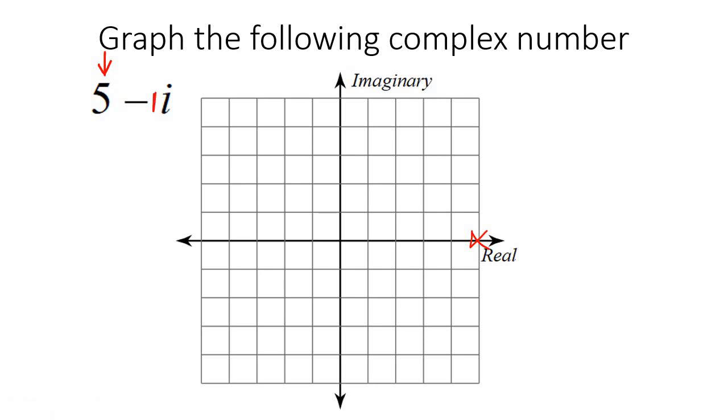And then what is the imaginary part? It's minus 1, so you go 1 down. So that means we're going to go 5 across and 1 down, so there's your dot. That is the answer. You don't have to draw a line. You don't do anything. You're literally just going to put a dot. That is how you graph a complex number.